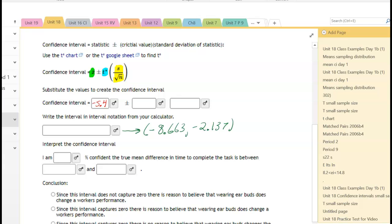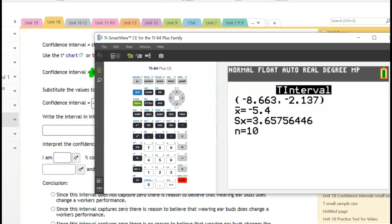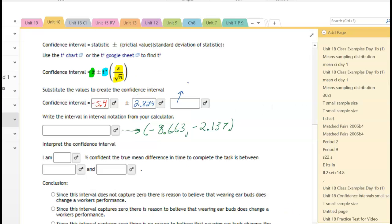...the t star is 2.8214. And then in this box, the standard deviation from the calculator, if you remember, it's right there on the screen, the S, 3.65. So it's 3.6576 divided by the square root of the sample size, which was 10.